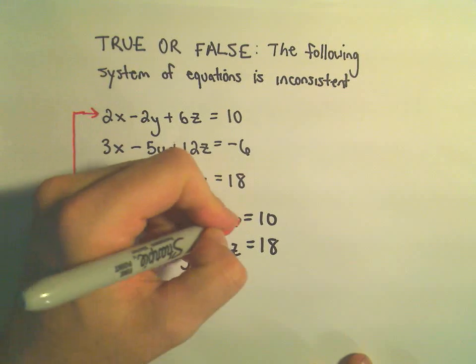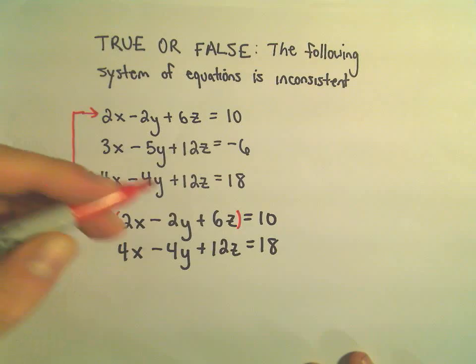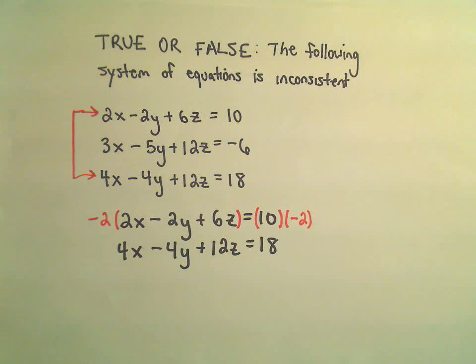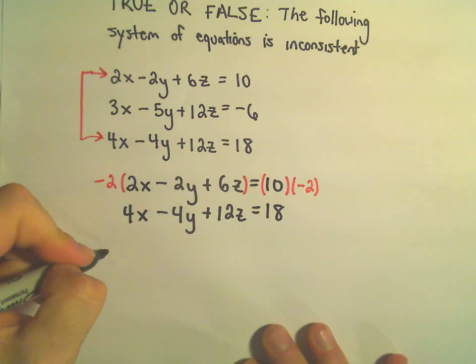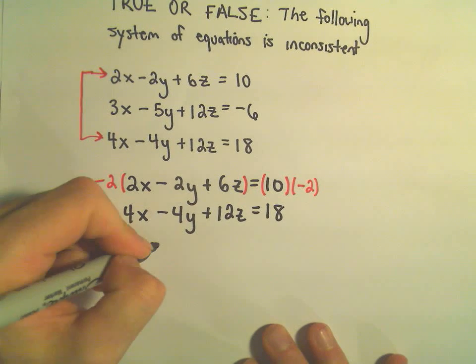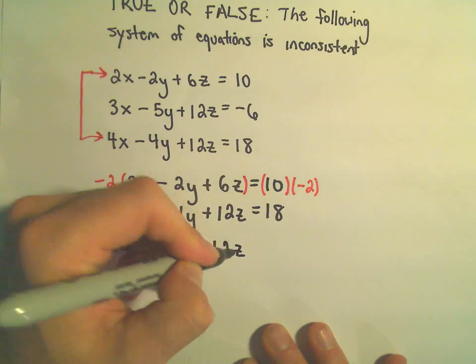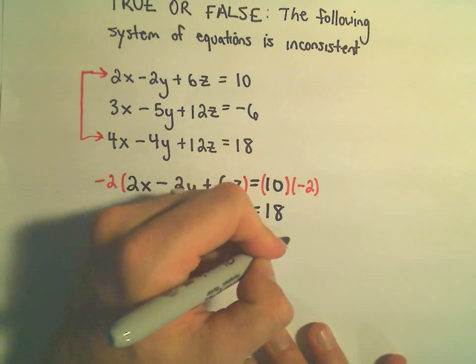I could multiply my first row by negative 2. And we would have to do that to both sides. And then what would we get? Well, our first row would become negative 4x, positive 4y, negative 12z, and then on the right side we would have negative 20.